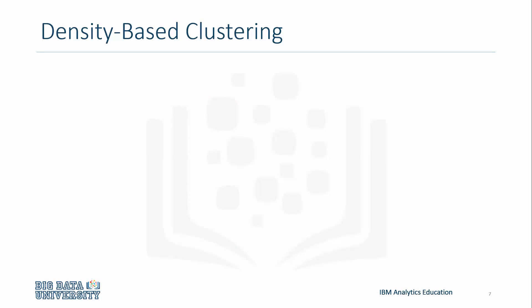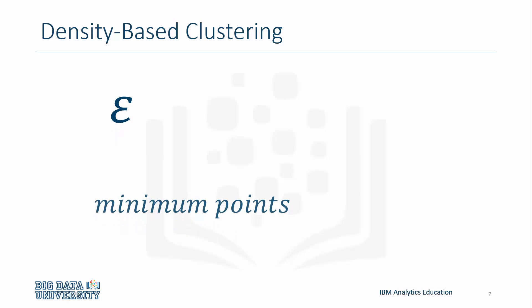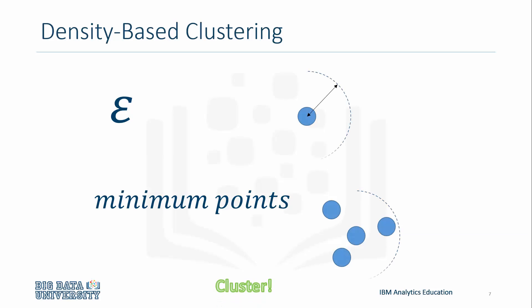There are two parameters that are taken into account: epsilon and minimum points. Epsilon is the maximum radius of the neighborhood, and minimum points is the minimum number of points in the epsilon neighborhood to define a cluster.